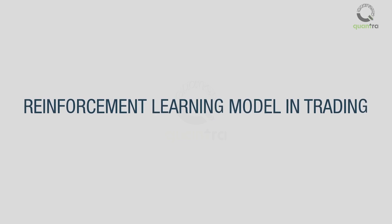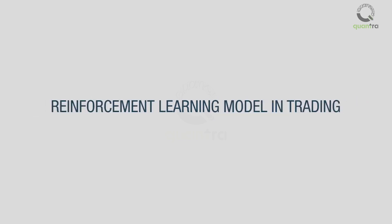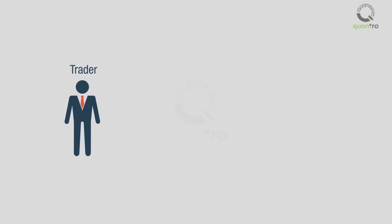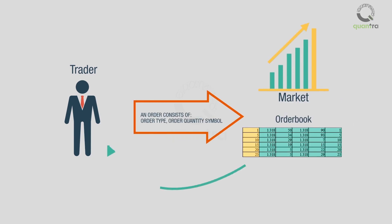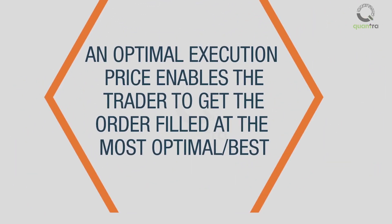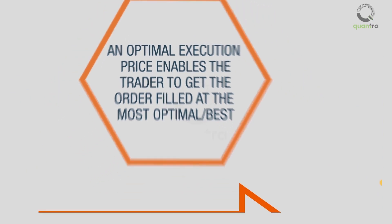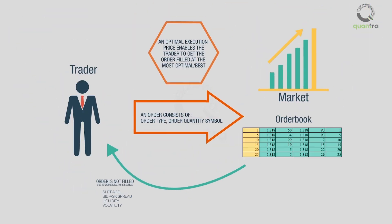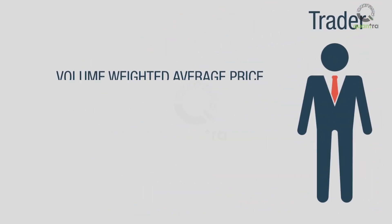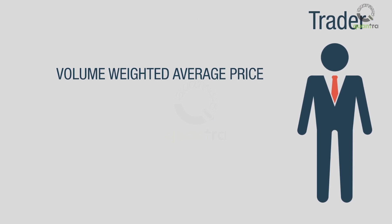Welcome to this video on reinforcement learning models in trading. In this video we will look at a common financial markets prediction problem which can be solved using machine learning techniques. The problem is to predict the optimal execution price such that the trade is highly profitable. There are many factors like slippage, bid-ask spread, liquidity, and volatility which could affect the execution of trades, hence there are many execution strategies such as the volume weighted average price which traders use to optimize their execution price.